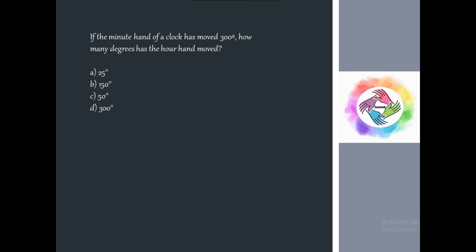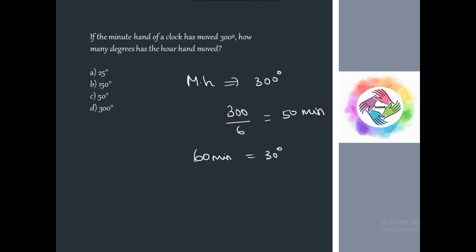Problem: If the minute hand of a clock has moved 300 degrees, how many degrees has the hour hand moved? The minute hand moves 6 degrees per minute, so 300 ÷ 6 = 50 minutes have passed. The hour hand moves 0.5 degrees per minute, so 50 × 0.5 = 25 degrees. The hour hand has moved 25 degrees.